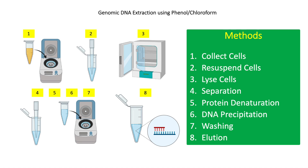For the final step, add 200 microliters of TE buffer or nuclease-free water. Tris-EDTA (TE) buffer dissolves the DNA and protects it from degradation by DNases or RNases. Store the extracted gDNA at 4 degrees, negative 20, or negative 80 degrees Celsius.